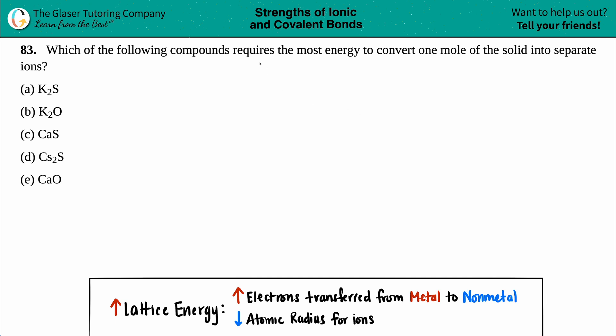Number 83. Which of the following compounds requires the most energy to convert one mole of the solid into separate ions? And then we have a multiple choice question. Oh yeah, we love multiple choice because we can always use our theory to kind of reason and whittle down the answers. Now, in this case, we need to find out which one out of these five, right, whether it's K2S or K2O, CaS, Cs2S, and CaO, which one requires the most energy to take that solid and turn it into its ions?